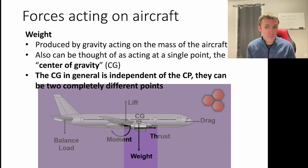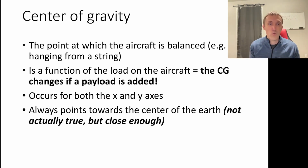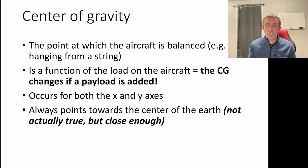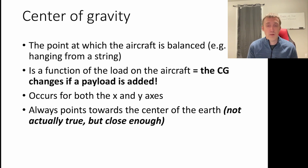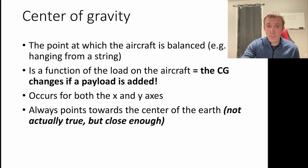These two points — CG and CP — can be completely different, and we'll talk more about what happens when they are different later on. The center of gravity is the point at which the aircraft is balanced — like if you hung the aircraft from a string or held it up on your finger. It's a function of the load of the aircraft: if you change the load, the center of gravity changes. If you change the payload on a drone, the center of gravity is going to change. Making sure that a drone is properly loaded is a big part of the pilot's responsibilities before a flight.